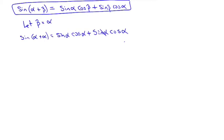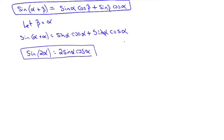If I simplify, alpha plus alpha is 2α. And sine α cosine α plus itself is 2 times what it was. So sine of 2α equals 2 sine α cosine α. This is the only identity for sine of a double angle — that's it.